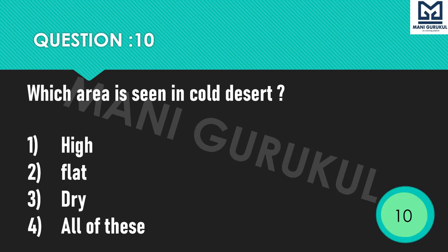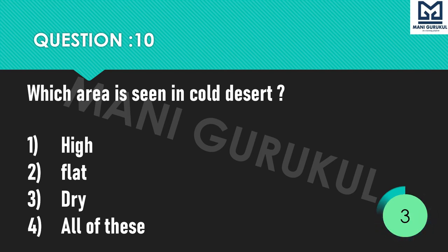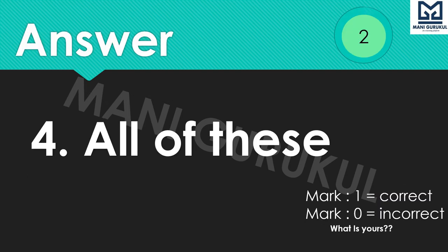Question 10: Which area is seen in a cold desert? Options: 1st High, 2nd Flat, 3rd Dry, 4th All of these. Time starts now. Do subscribe to this channel. Answer is 4th: All of these.